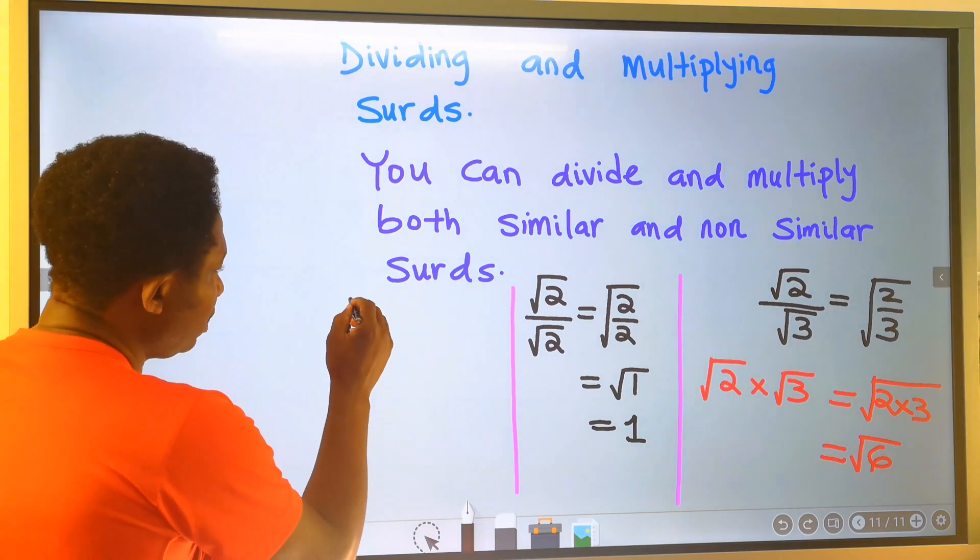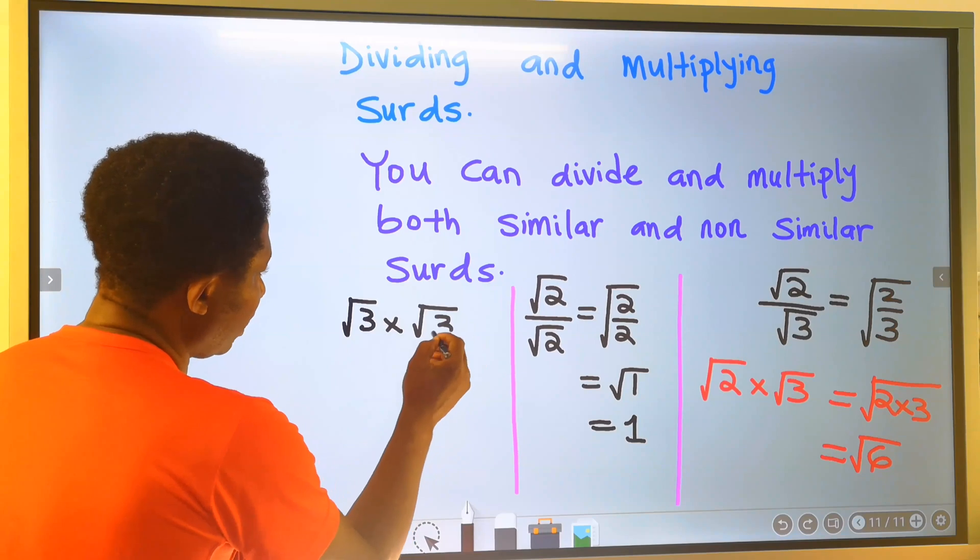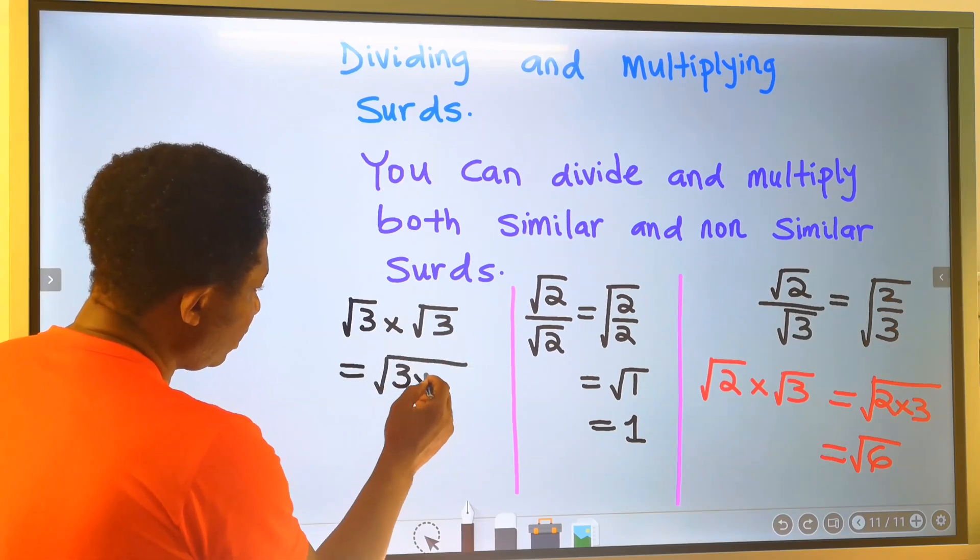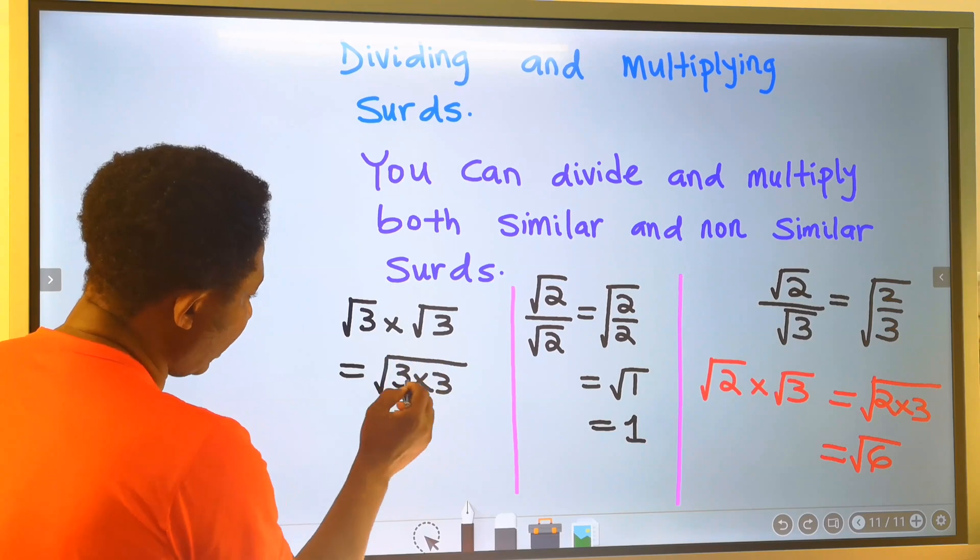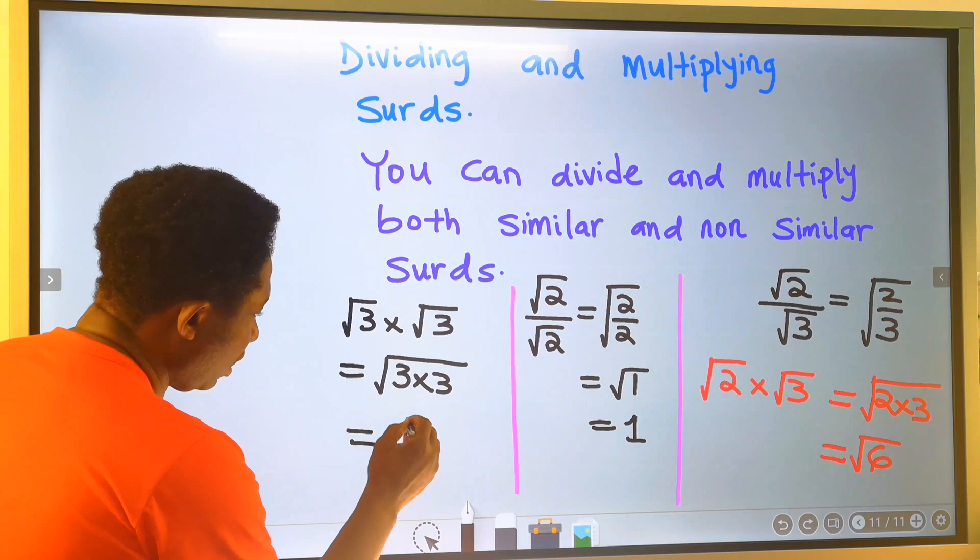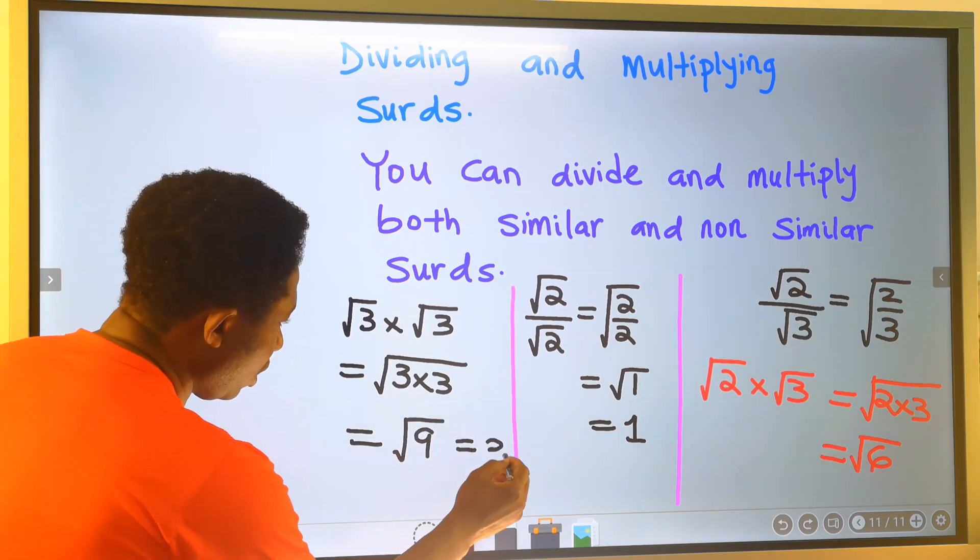Likewise, the square root of 3 times the square root of 3. This is 3 times 3 inside one square root. And this is the square root of 9, which is equal to 3.